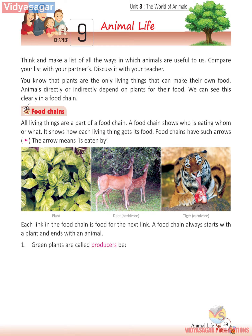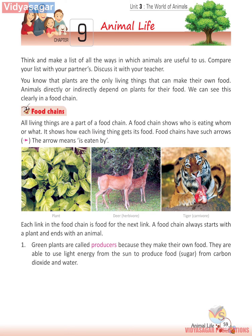First, green plants are called producers because they can make their own food. They are able to use sunlight — energy from the sun — to produce food, sugar, from carbon dioxide and water.